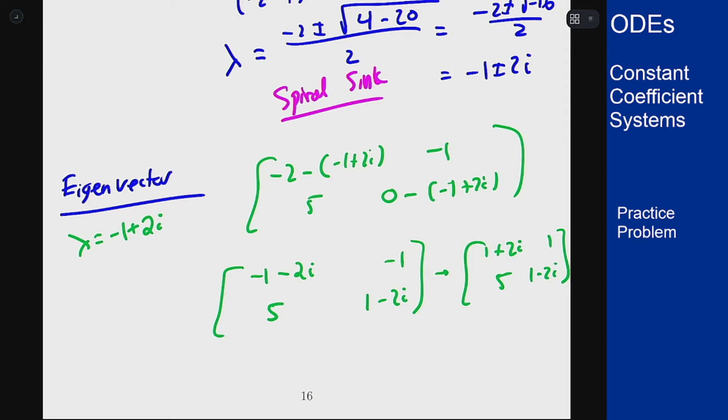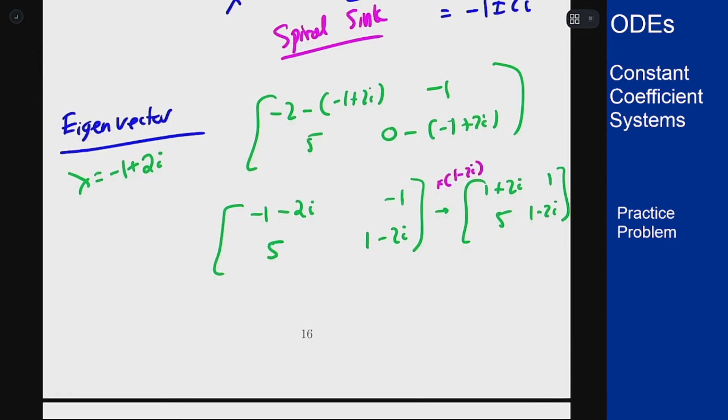And then multiply the top row by the conjugate of that first entry so times one minus two i which will give me that this becomes one minus two i plus two i plus four is five one minus two i five one minus two i. So the rows are in fact redundant. That's a quick check the eigenvalue was done correctly.